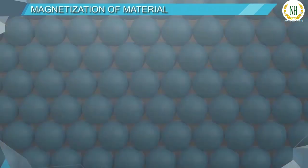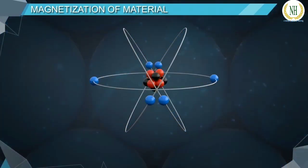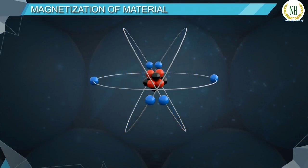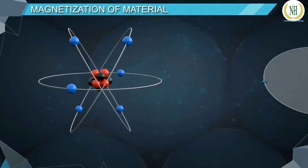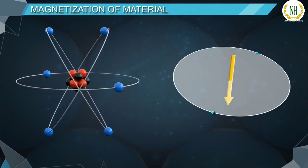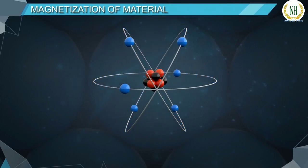Matter is made up of atoms, which are made up of electrons and a nucleus. The electrons revolve around the nucleus in a circular orbit. Just as a current-carrying loop constitutes a magnetic dipole moment, electrons moving in these orbits also constitute a magnetic dipole moment.